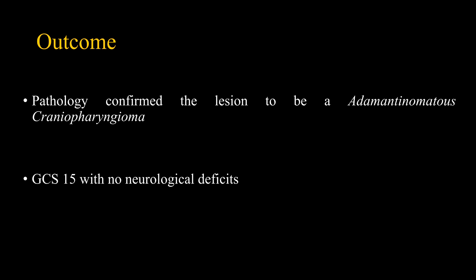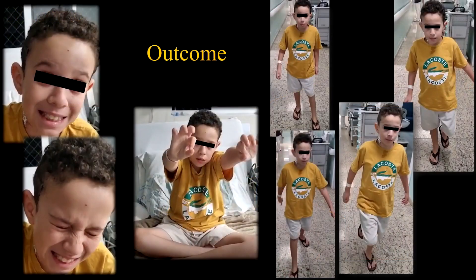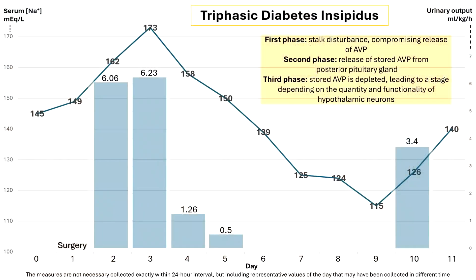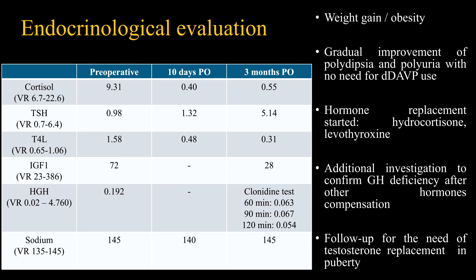The patient presented with no neurological deficits on follow-up, as observed in images from the first days following the procedure. Regarding endocrinological function, the patient presented a triphasic manifestation of diabetes insipidus in the first days following surgery, demanding proper correction, but with progressive resolution and no need for desmopressin at discharge. In follow-up, hypothyroidism, hypocortisolism, and possible growth hormone deficiency were identified and treatment initiated.